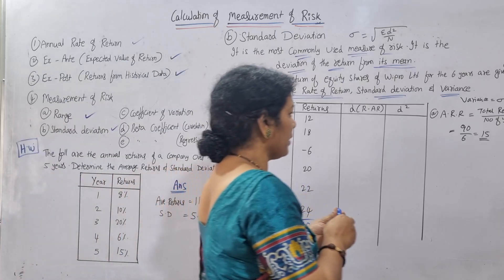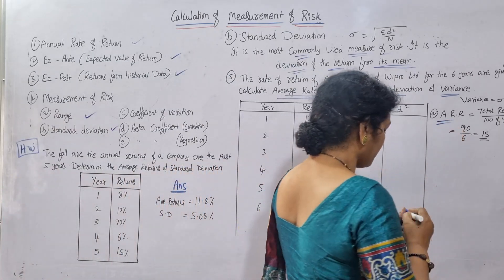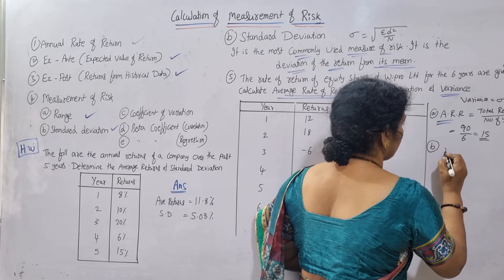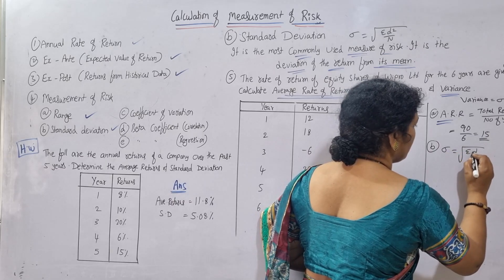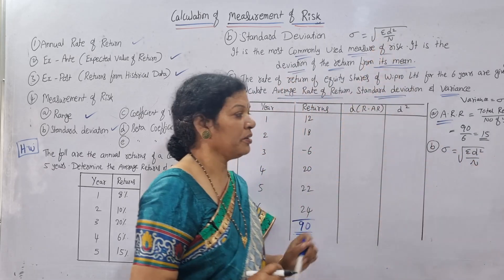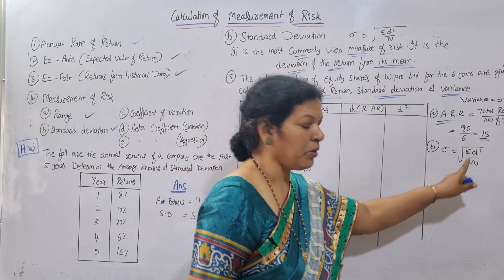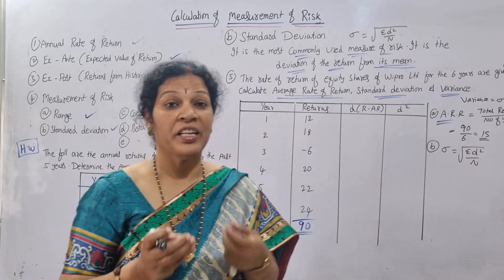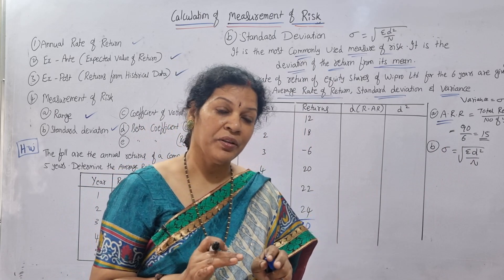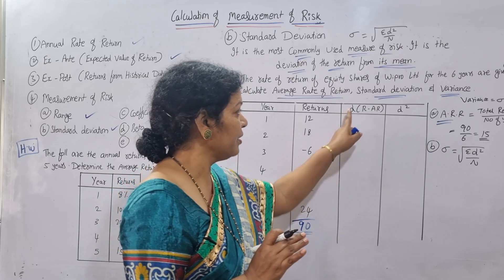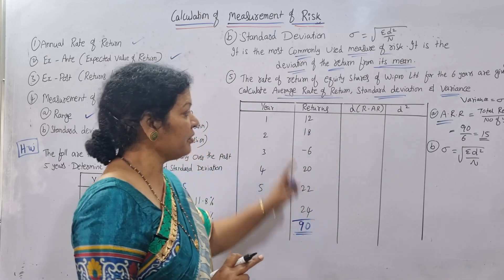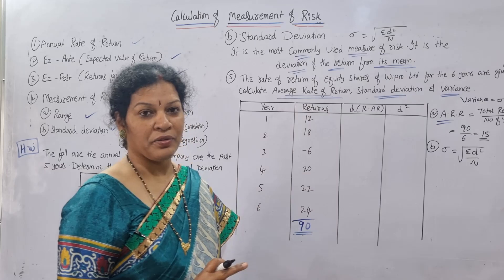Next, standard deviation. The formula is: standard deviation equals root of sigma d-square by n. As per the formula, we first need d — the deviations. D equals returns minus average returns. Average return is 15, so we subtract 15 from each year's return.